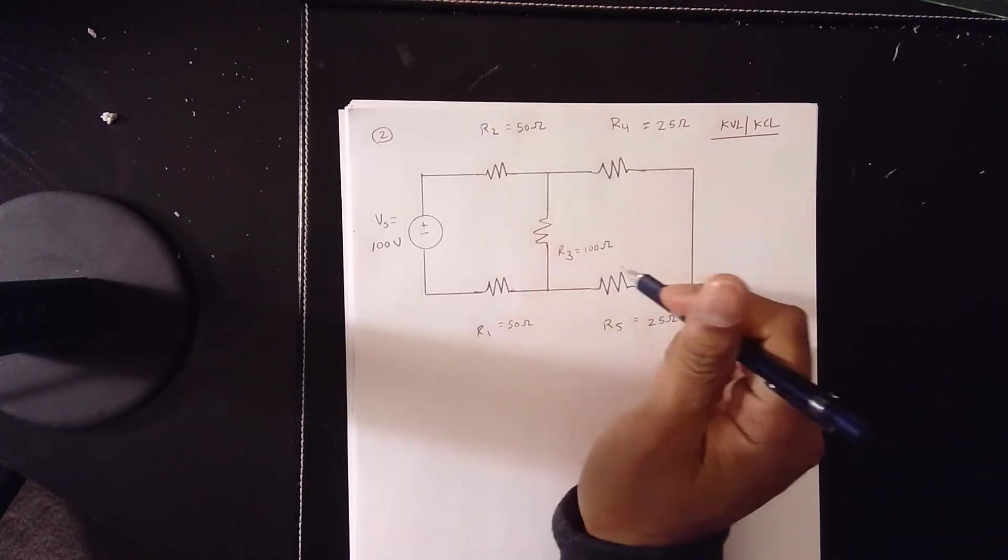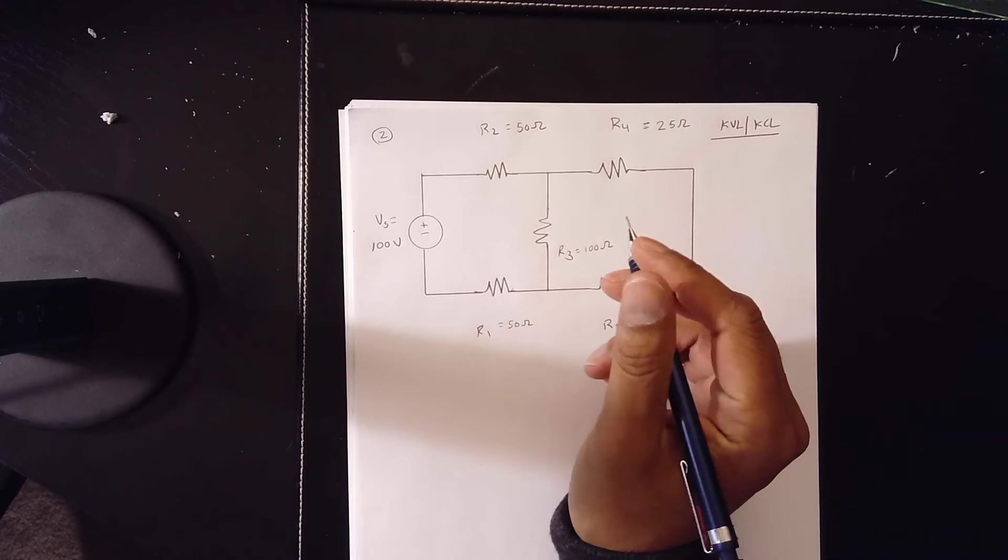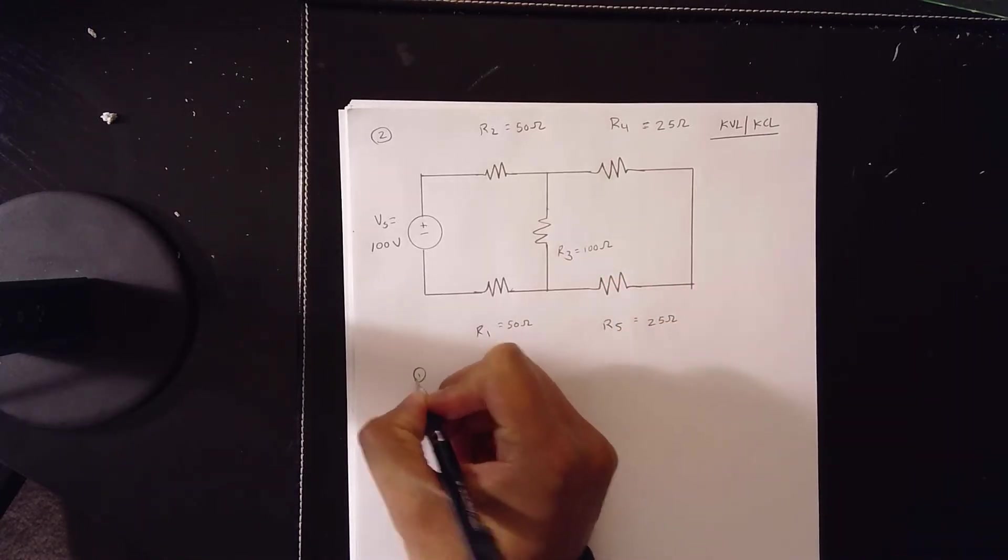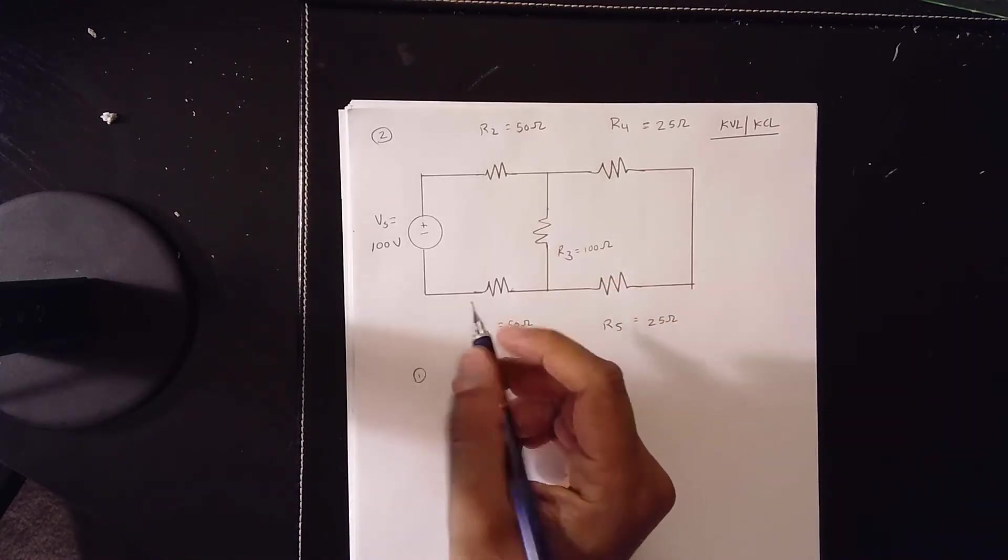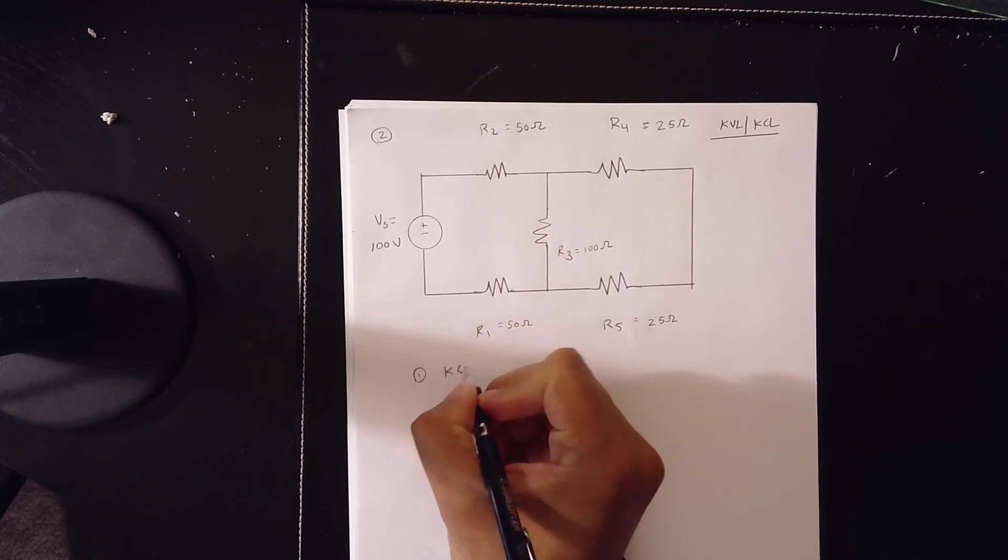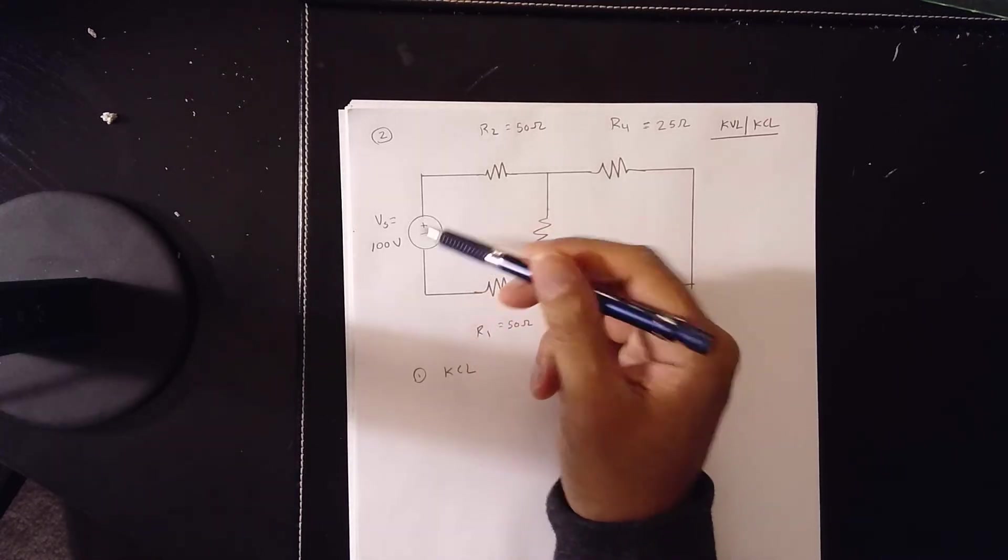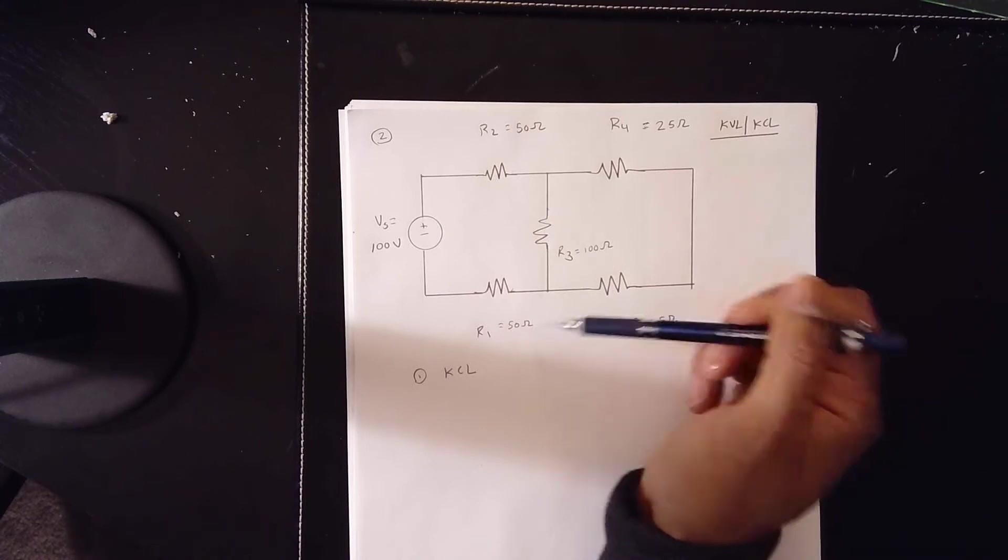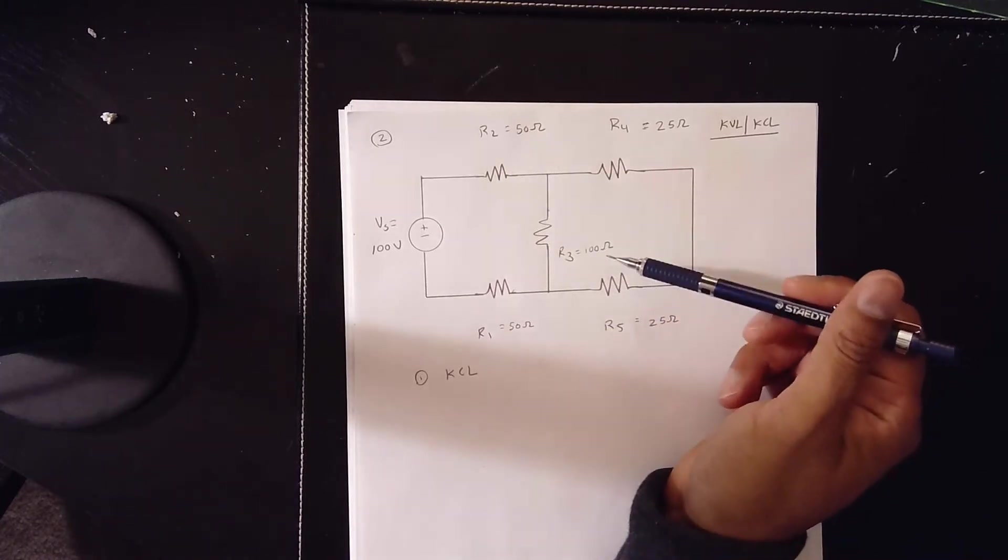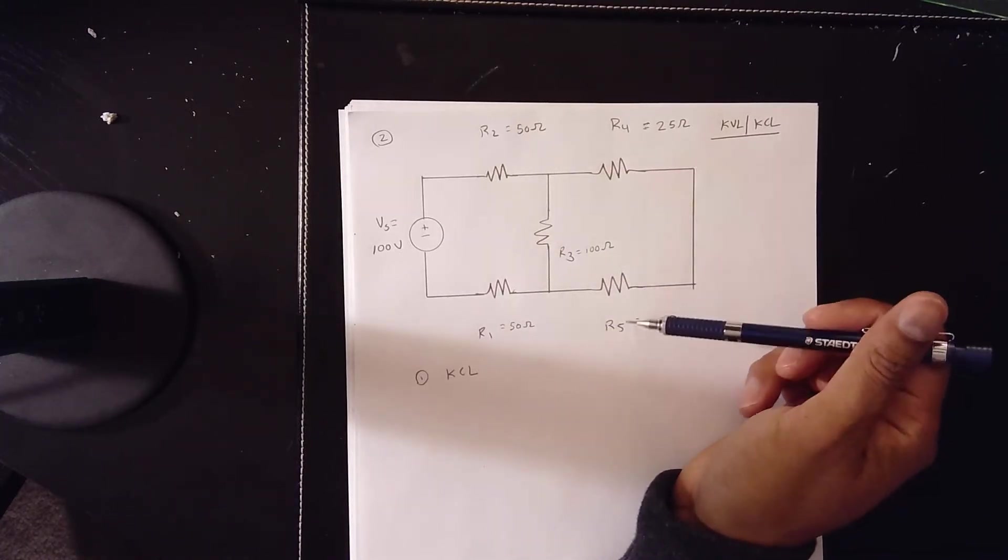We'll solve this circuit by KVL-KCL, and the first thing we want to do, step one, is we want to be able to always do KCL. Now, we do have a voltage source of 100 volts, R1 at 50, R2 at 50, R3 at 100, R4 at 25, R5 at 25.